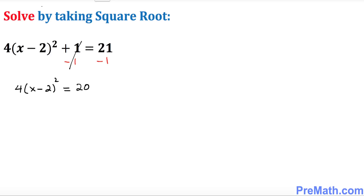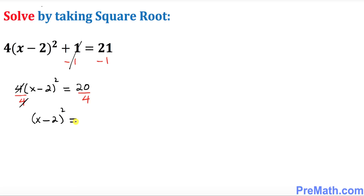Now we divide both sides by 4. The 4s cancel, and we're left simply with x minus 2 squared equals 5.